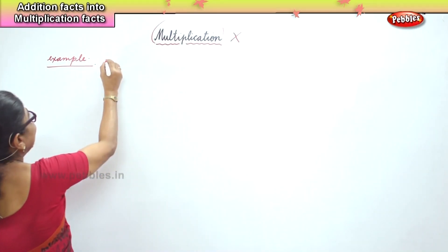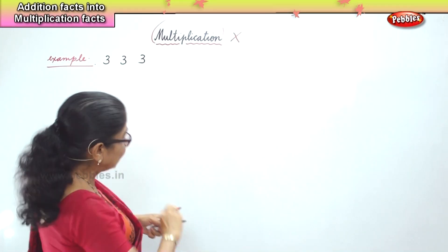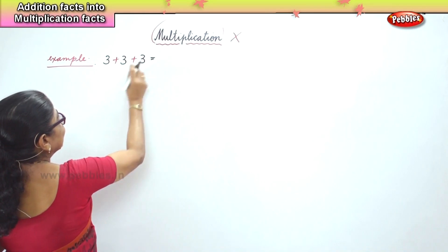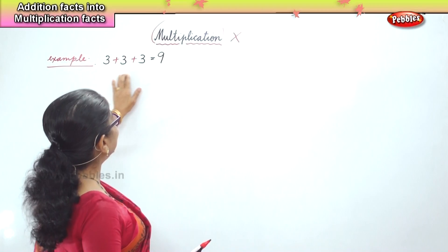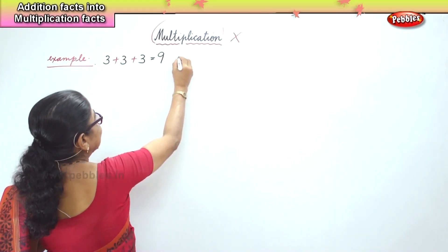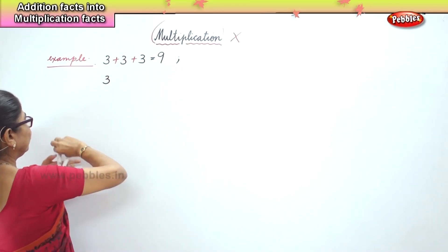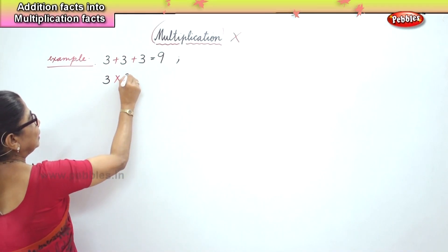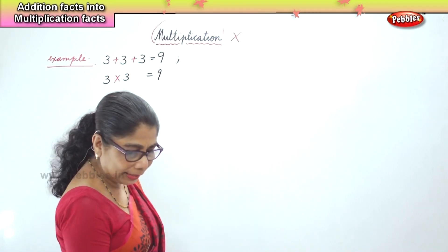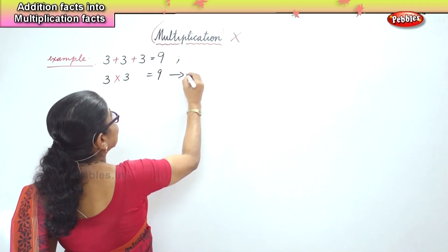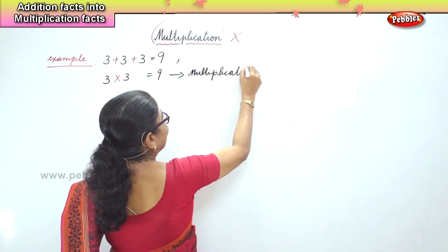3 plus 3 plus 3: 3 plus 3 gives us 6, 6 plus 3 gives us 9. Now we must know what is an addition fact — this is the repeated addition. When we say multiplication fact, 3 times 3 into 3 gives us 9, and we call this a multiplication fact.